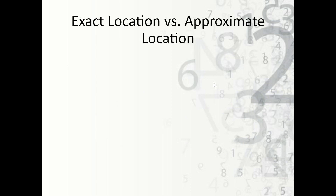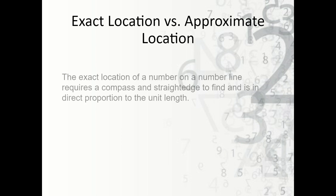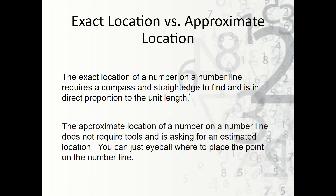Now let's talk about location — the difference between exact location and approximate location. The exact location of a number on a number line requires a compass and straight edge and is in direct proportion to the unit length, so we know exactly where it is. Approximate location on a number line does not require tools and is an estimation. For example, splitting a check and everyone puts in $20 is approximate, whereas everyone owes $19.85 is exact.